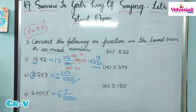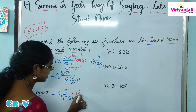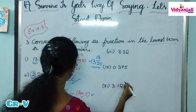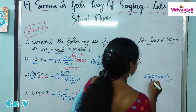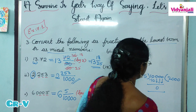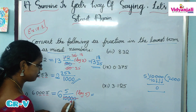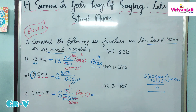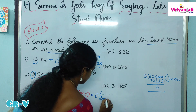Now, 5 and 10000 can be cancelled in the 5 times table. Let us do the division: 5 goes into 10000 — 5 times 2 is 10, with 3 zeros remaining, giving 2000. And 5 divided by 5 is 1. So the final answer is 6 and 1 by 2000.